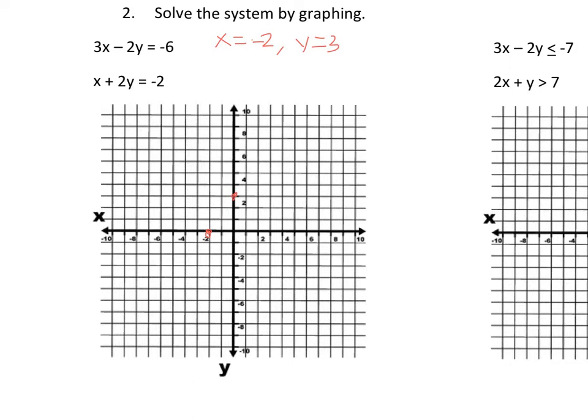So I'm going up 3 over 2, up 3 over 2, and then my other line is x is negative 2 and y is negative 1. So where they crossed is at negative 2, zero. You want to write it as an ordered pair.